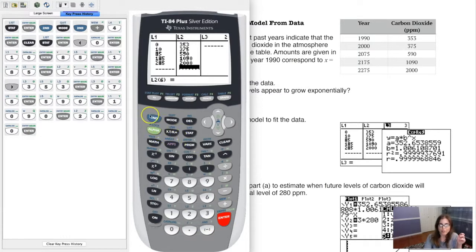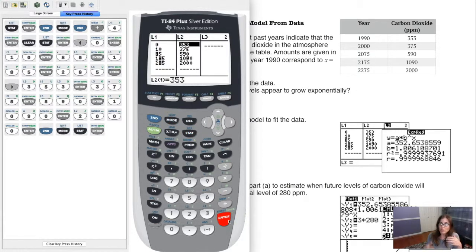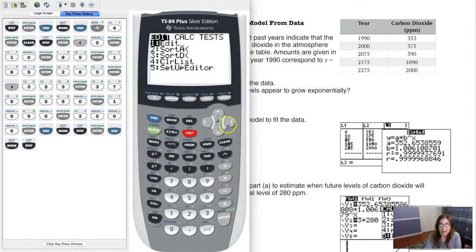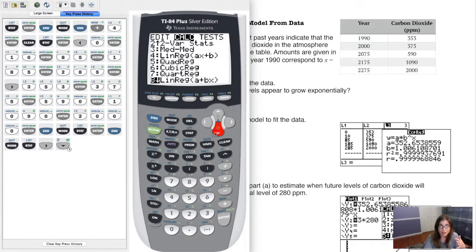Let's do part B and try to find our exponential model. We've done this a couple times in this chapter, but it's always good to repeat it. Let's do some data entry. Our base year was zero, then we had 10, 85, 185, 285. You want to put your x values in, not necessarily the year.